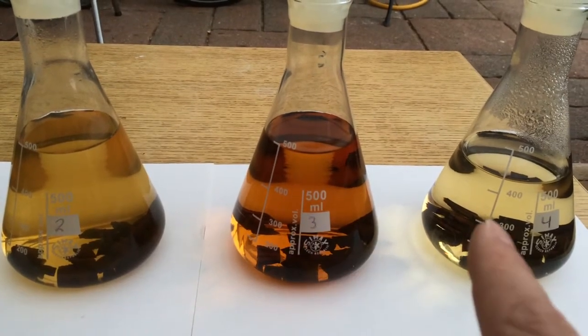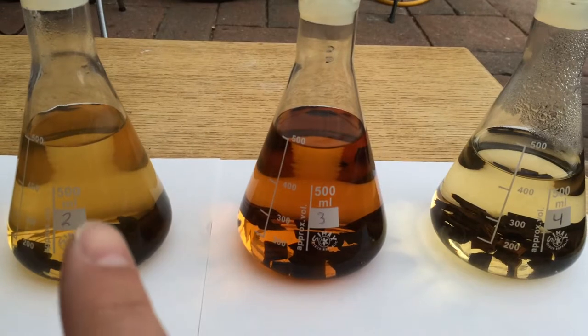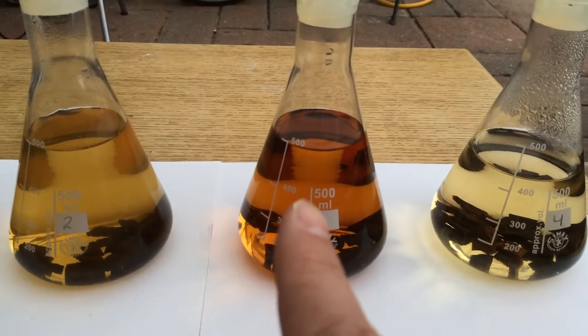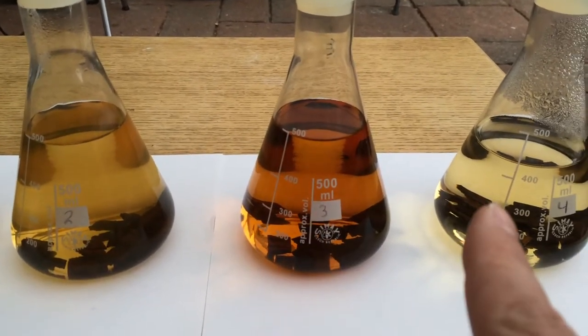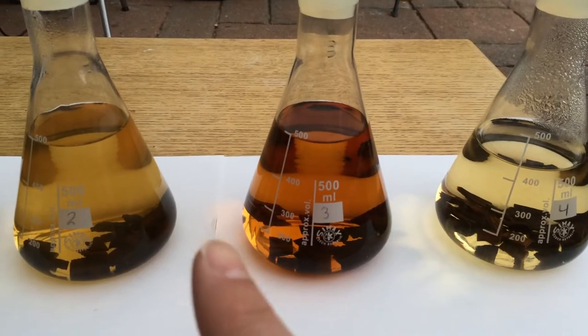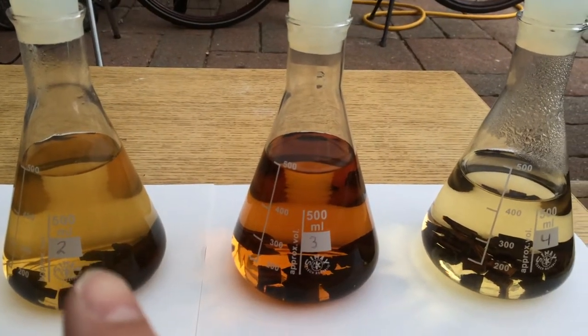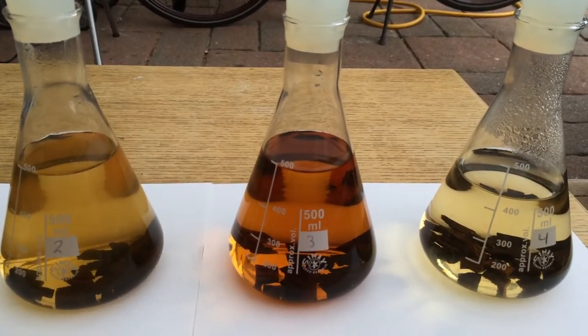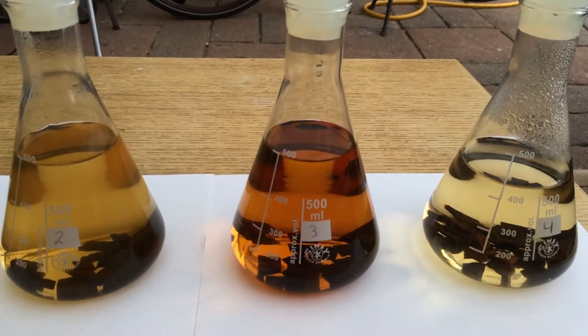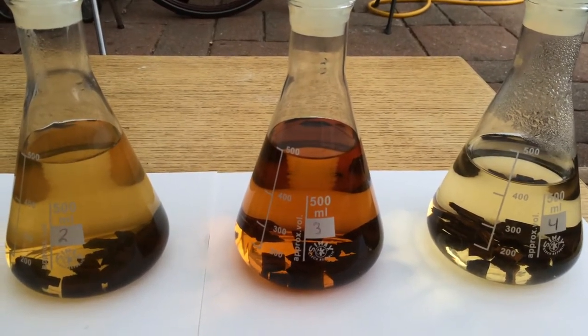From the looks of it, this one is reacting more than this one or this one. This one is more earthy, this one is a nice copper color, this one is turning yellow. All have the same amount of oak chips, roughly the same weight and surface area.